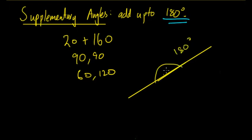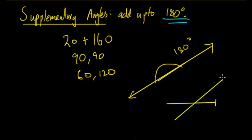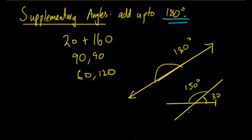When you add two supplementary angles together you'll get a straight line, and this is useful in lots of geometry. When you have two lines crossing, you're likely to have two angles that add up together — for example 30 and 150 degrees.